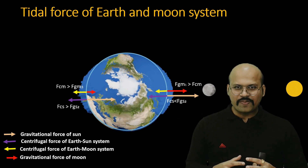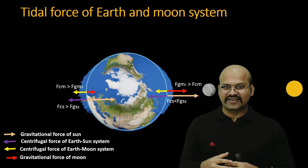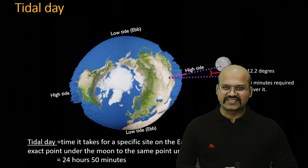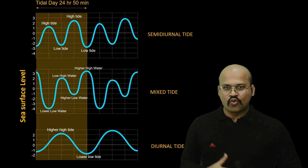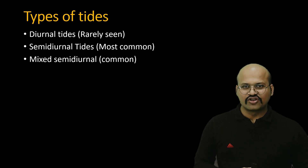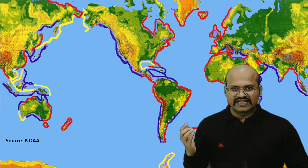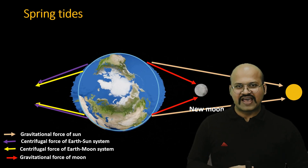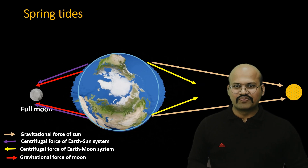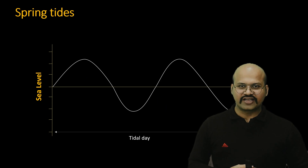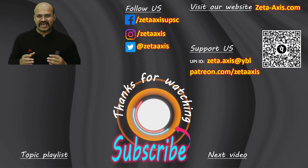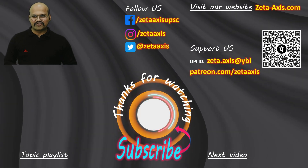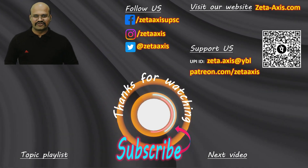I hope I was able to explain how tides are created around our earth. In the next video we will discuss the properties of tides — the duration between two high tides, different classifications of tides based on periodicity, and the alignment of the earth, sun, and moon. Thank you. If you liked the video, please subscribe to the channel and share it with your friends.